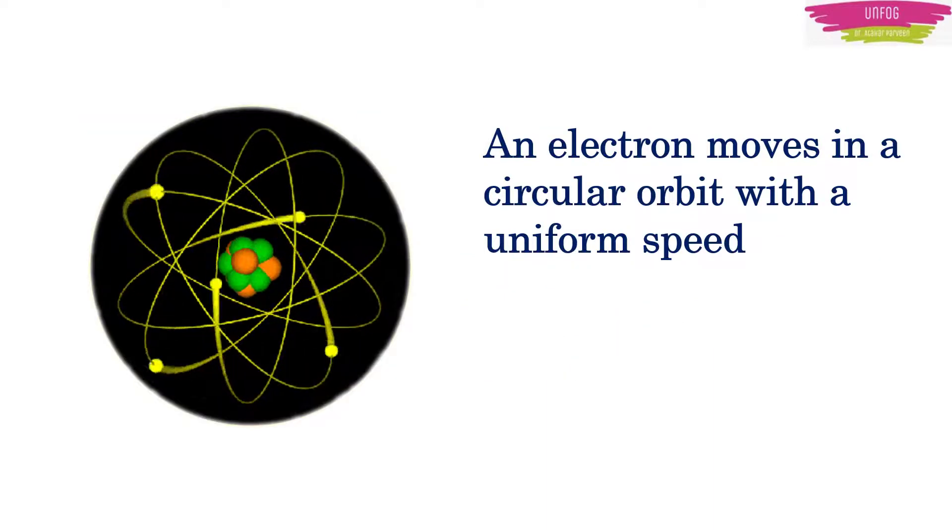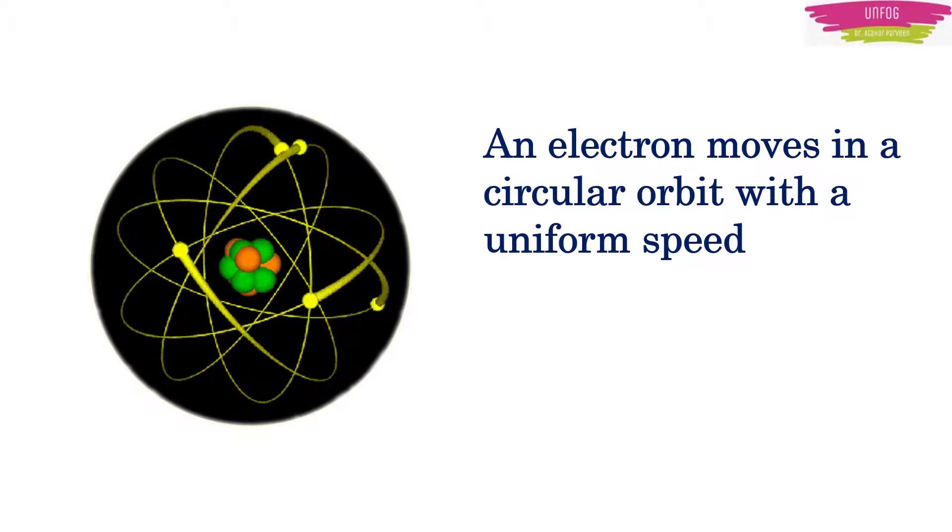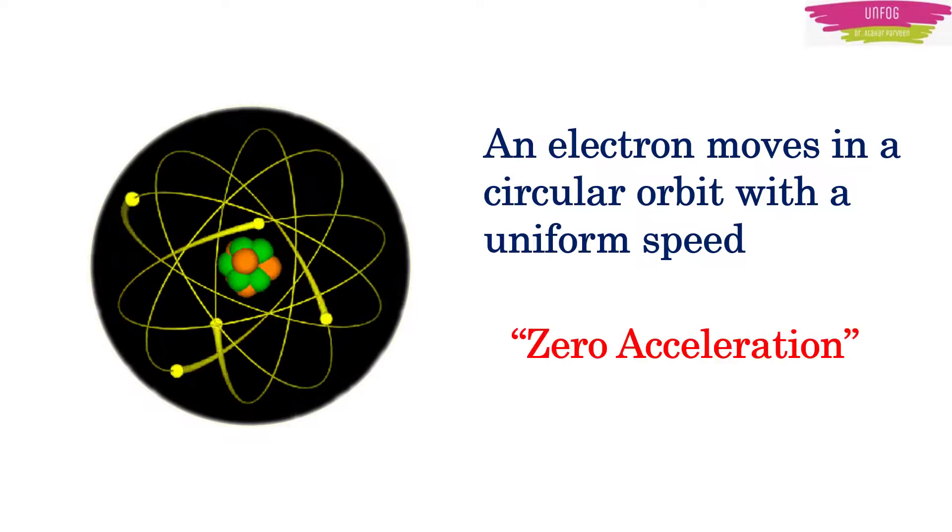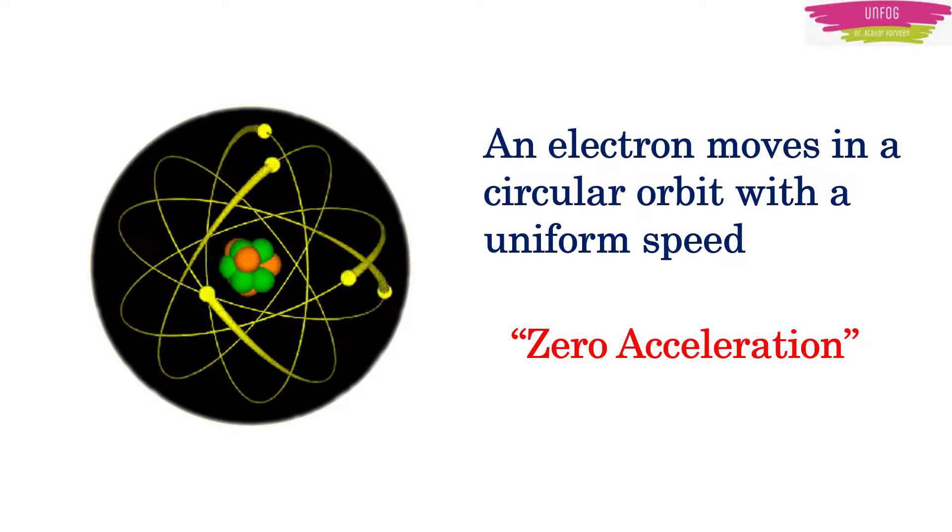First one is a simple answer that an electron is moving in a uniform circular motion with uniform speed, which means that the acceleration is zero here. So if electron is not accelerating, then it should not radiate energy as well.